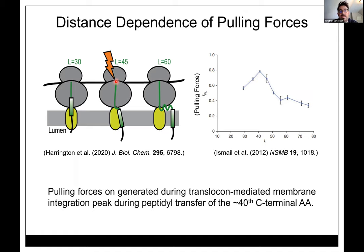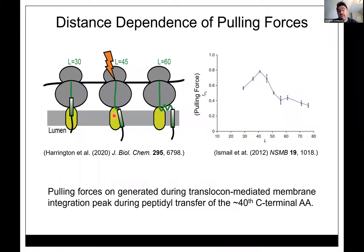Serendipitously, groups in Sweden — Gunnar von Heijne's group and others — have been using arrest peptides as force sensors. Specific arrest peptide sequences cause the ribosome to stall because they stick within the exit tunnel; you need force to dislodge them. They found a 'magic distance': if a transmembrane domain goes into the translocon and turns the corner, it dislodges that arrest peptide, with a force maximum around 40–45 amino acids in eukaryotic ribosomes.